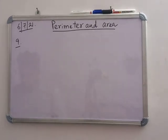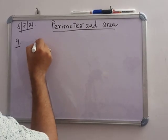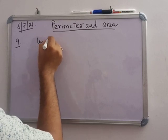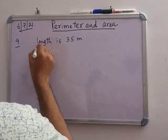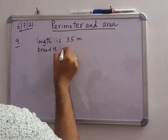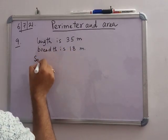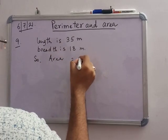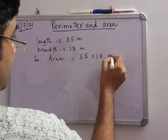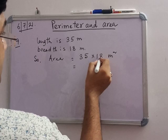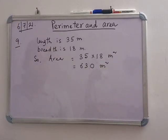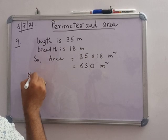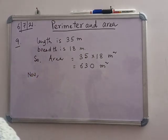Length is 35 meter. Breadth is 18 meter. So area is 35 into 18 meter square. That means this is 630 meter square.